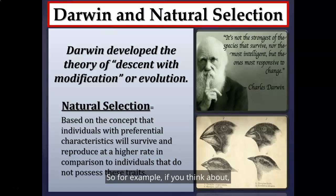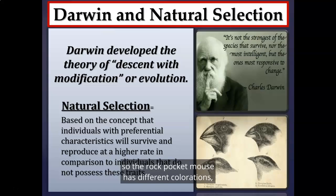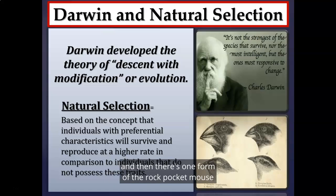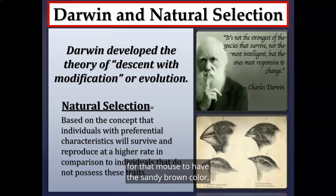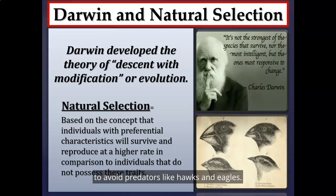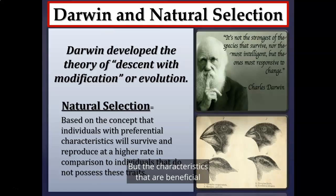For example, consider the rock pocket mouse. It has two color forms: a light sandy color and a dark gray, almost blackish color. In the southwestern desert, blending in with sand is more beneficial, so the sandy brown color helps the mouse avoid predators like hawks and eagles. But the beneficial characteristic depends on the environmental circumstances.